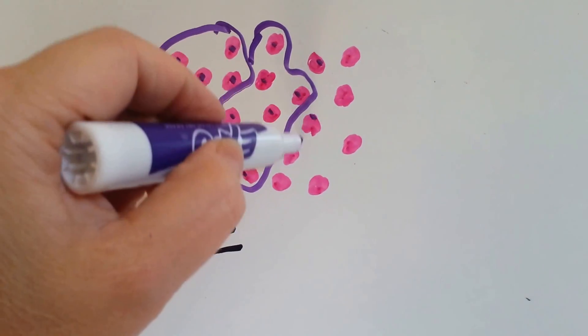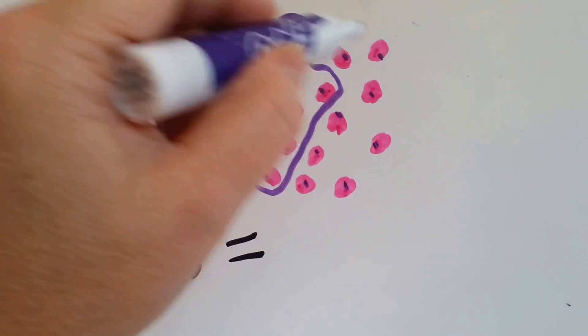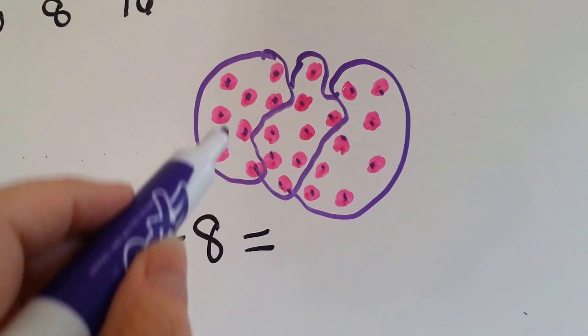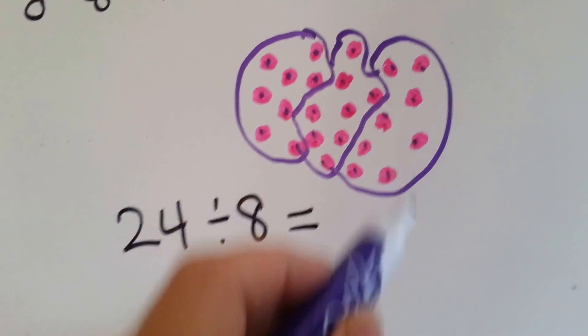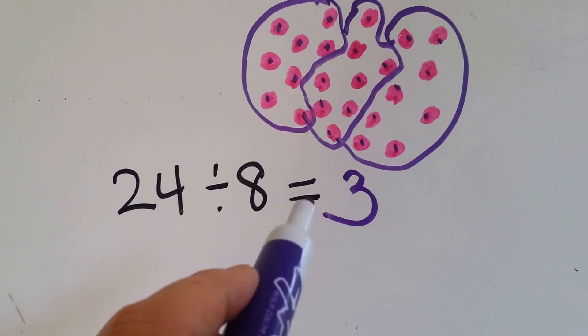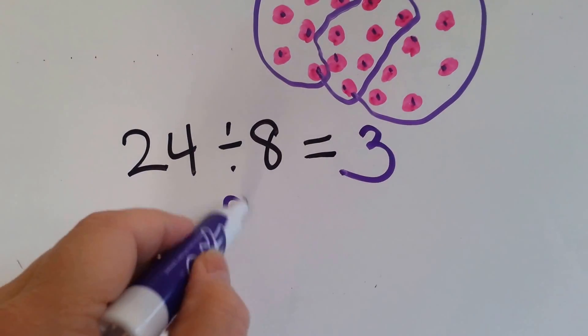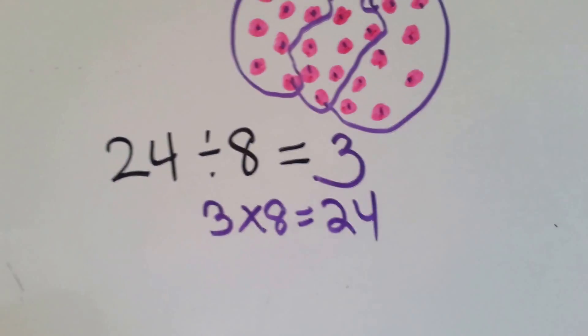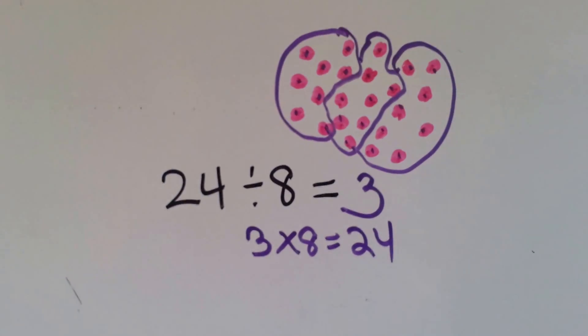And then we have 1, 2, 3, 4, 5, 6, 7, 8. That's our last group. How many groups do we have? We have 1, 2, 3. 24 divided by 8 equals 3. 3 times 8 equals 24. See that?